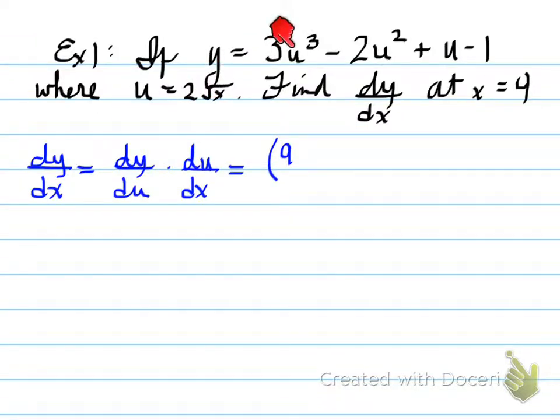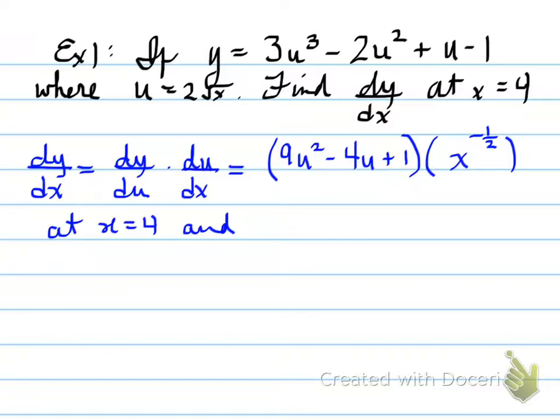But we know through Leibniz that dy dx is equal to dy du times du dx. Well, I can do dy du, which is 9u squared minus 4u plus 1. And then you take the du by dx. So I need to take the derivative of this, which is x to the negative 1 half. The reason why is this is x to the 1 half. Bring the 1 half to the front. 1 half times 2 is 1. So you'll have 1x to the negative 1 half. That's why we have this. Now, we need to know when, at the value, when x equals 4.